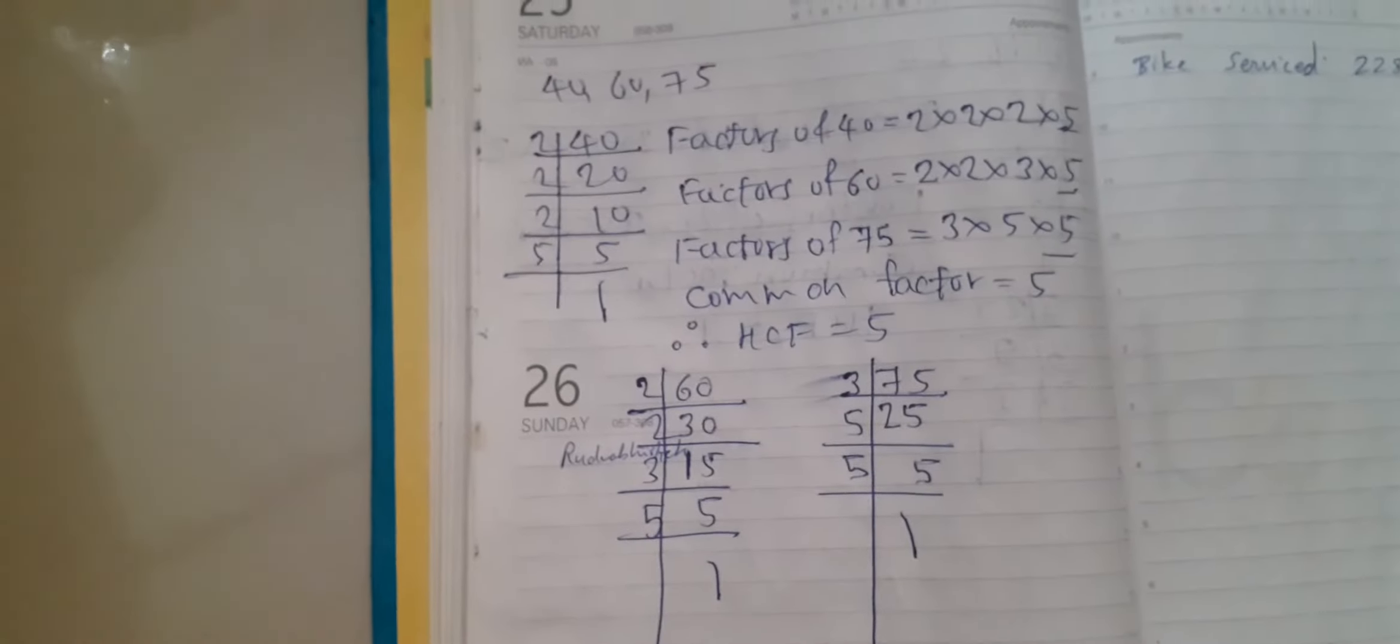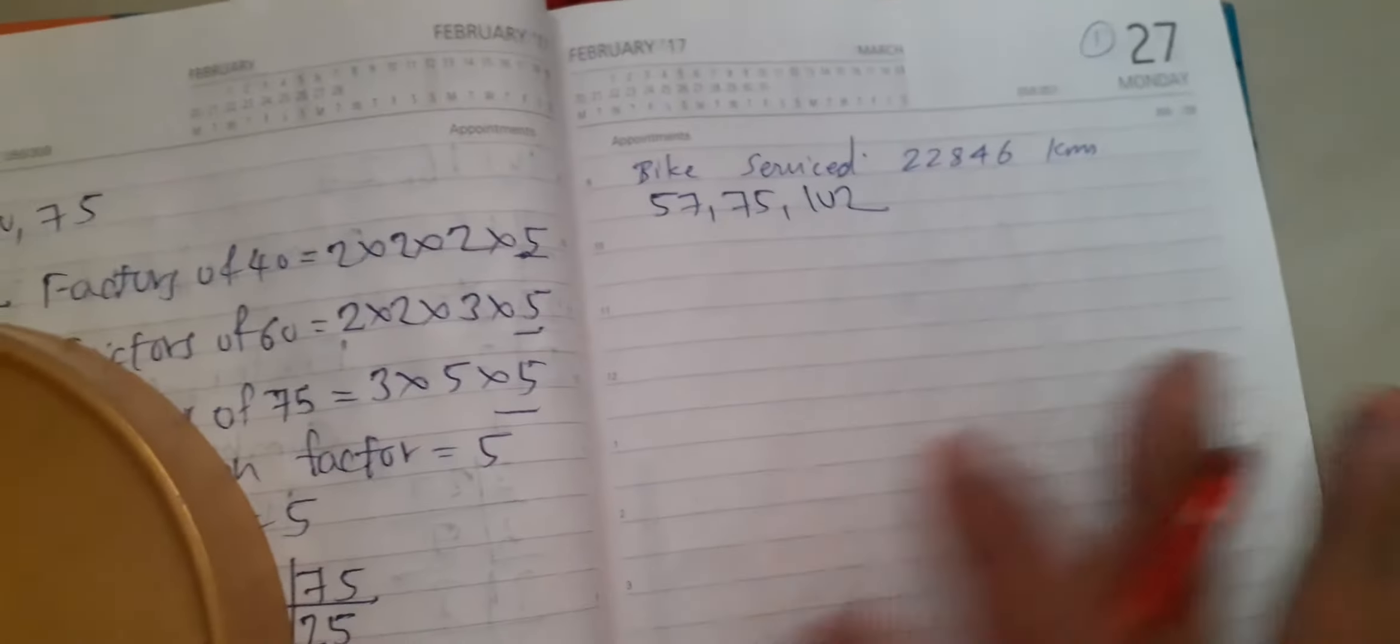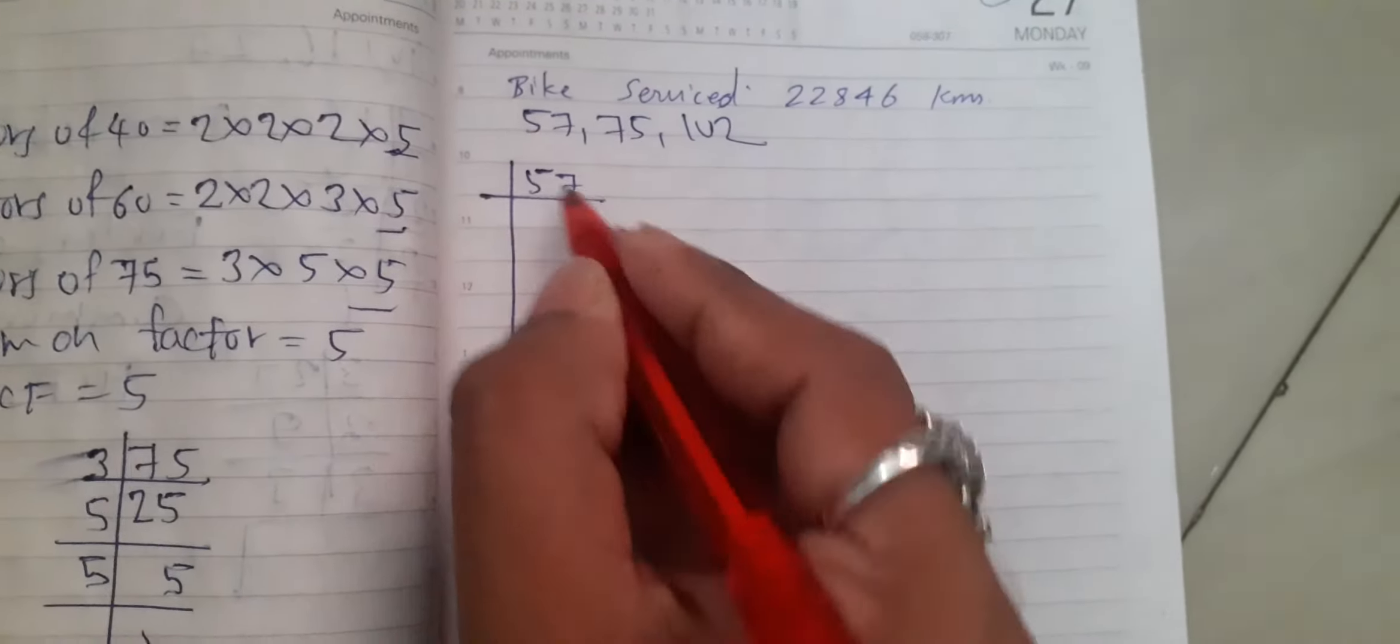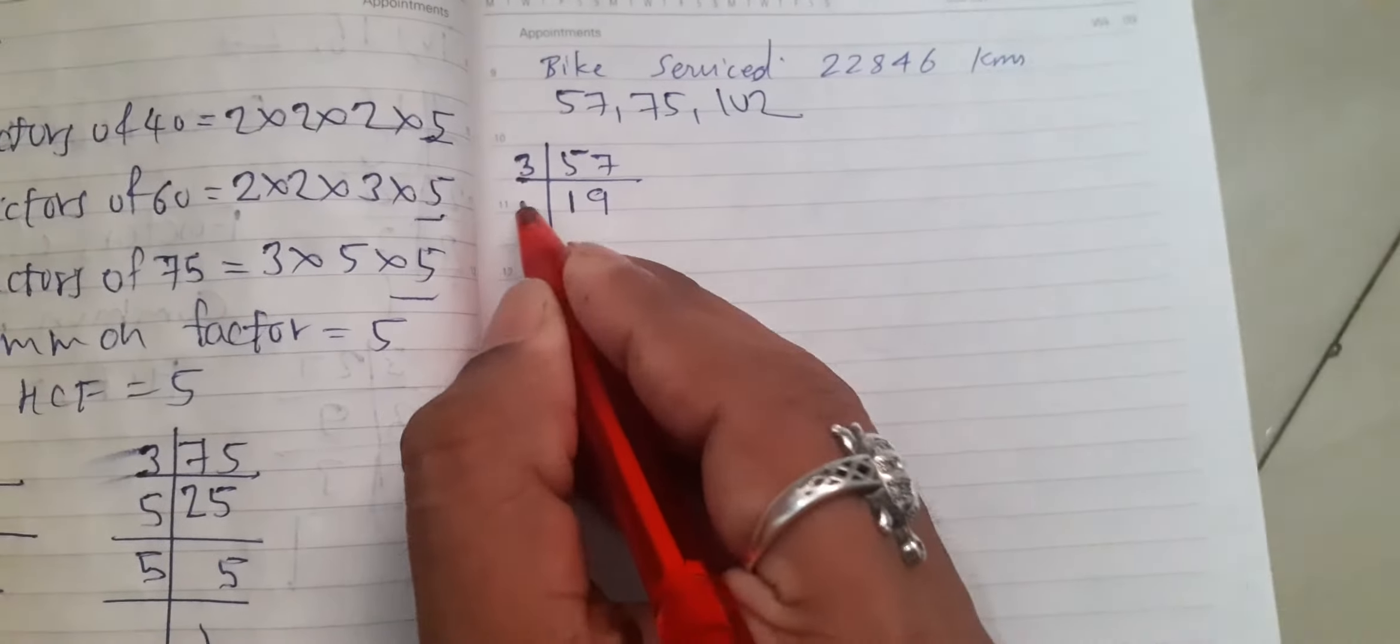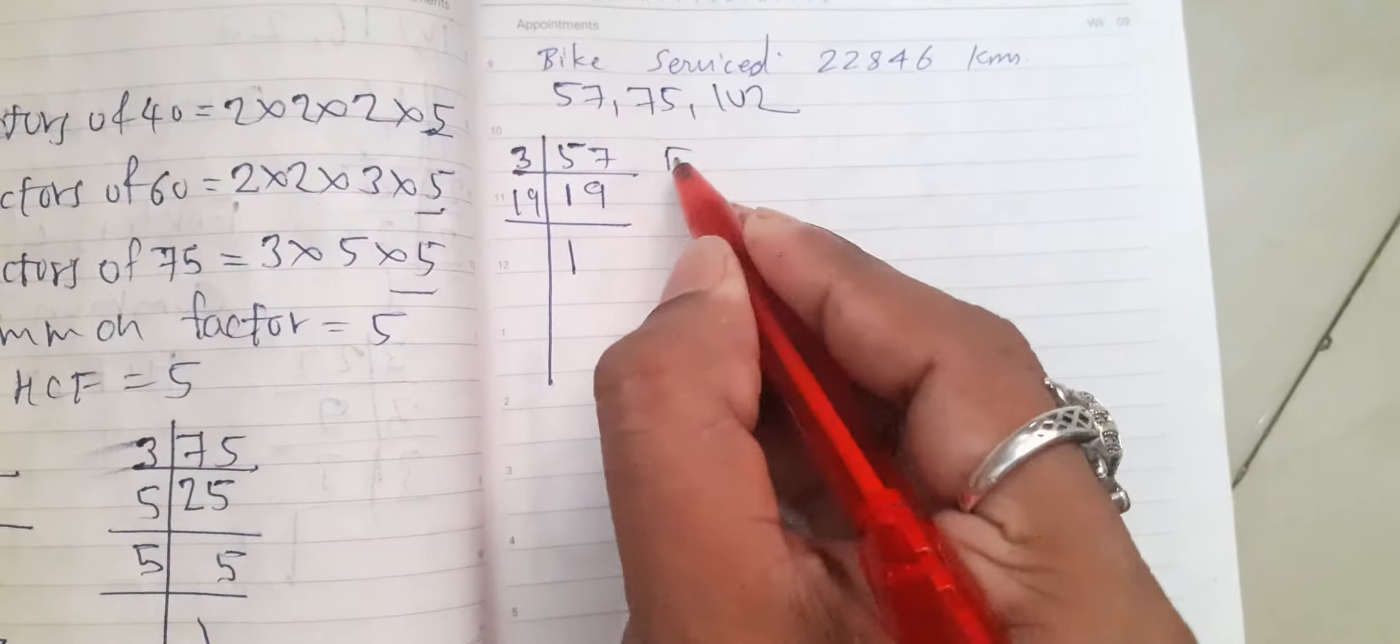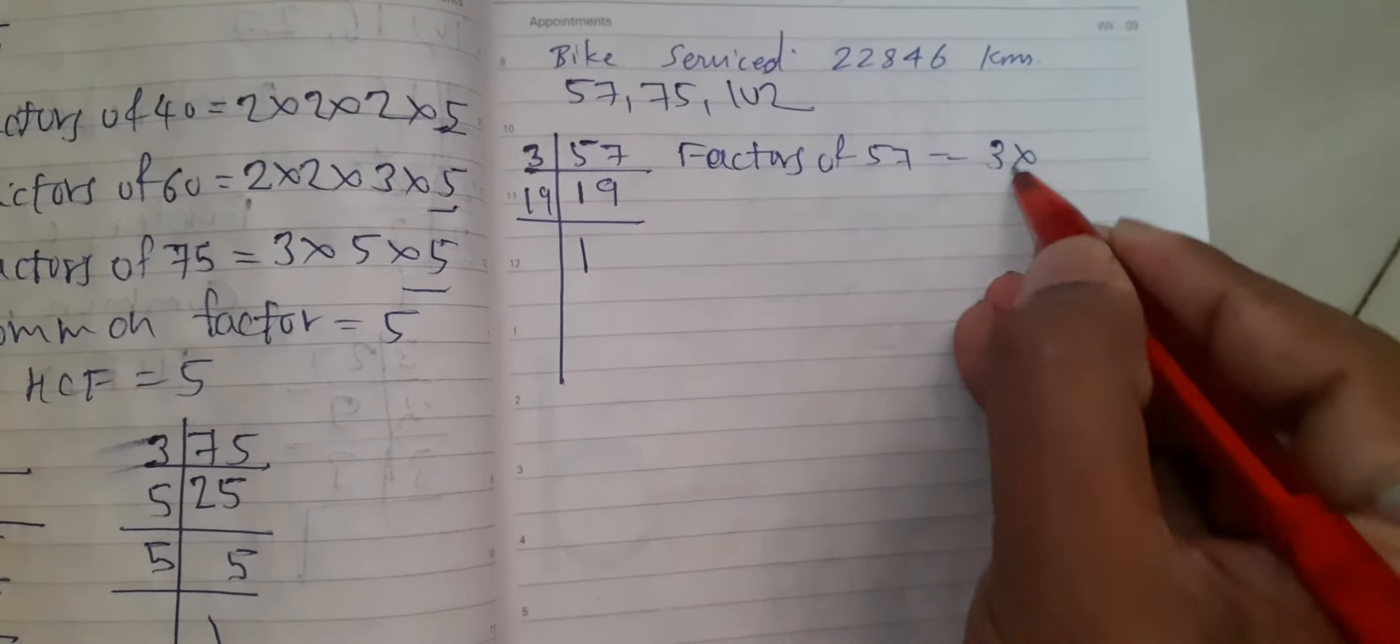One more question: 57, 75, 102. 57 will go by 3. 3 times 19 is 57. 19 times 1 is 19. So the factors of 57 is equal to 3 into 19.